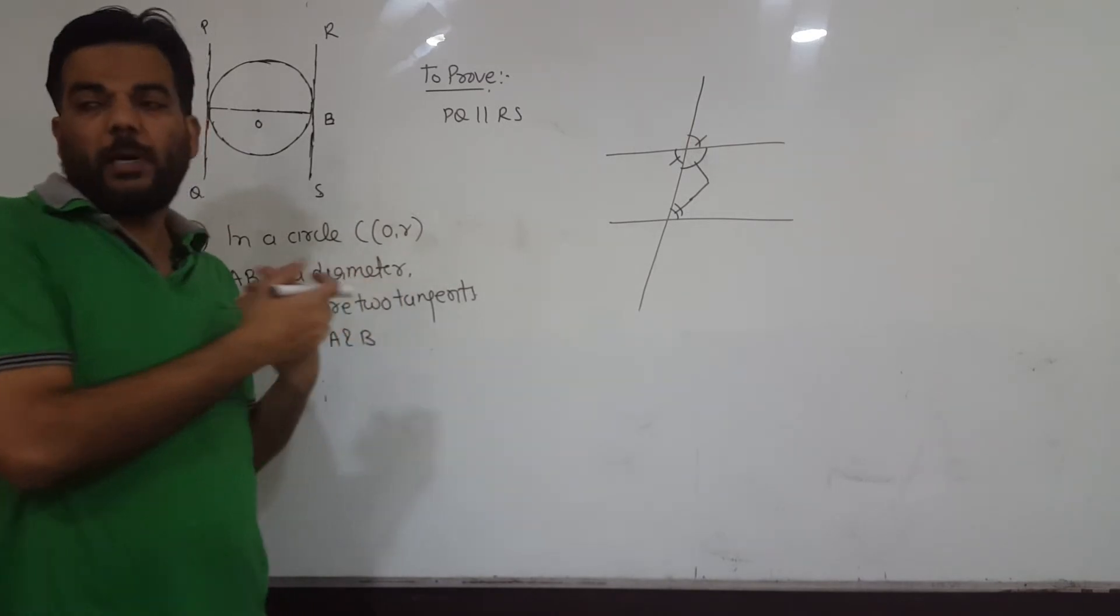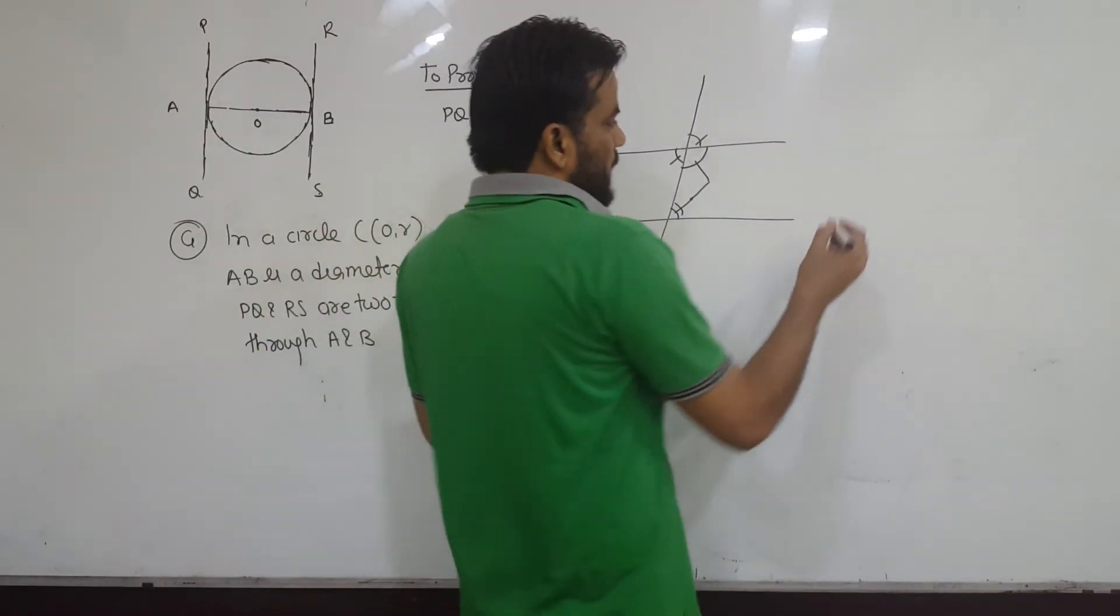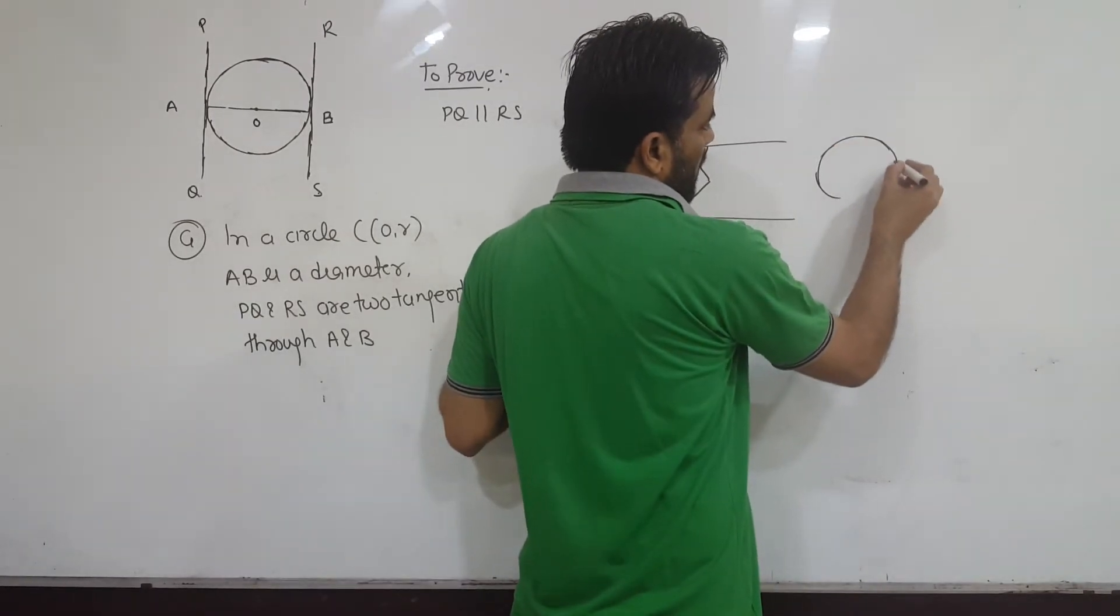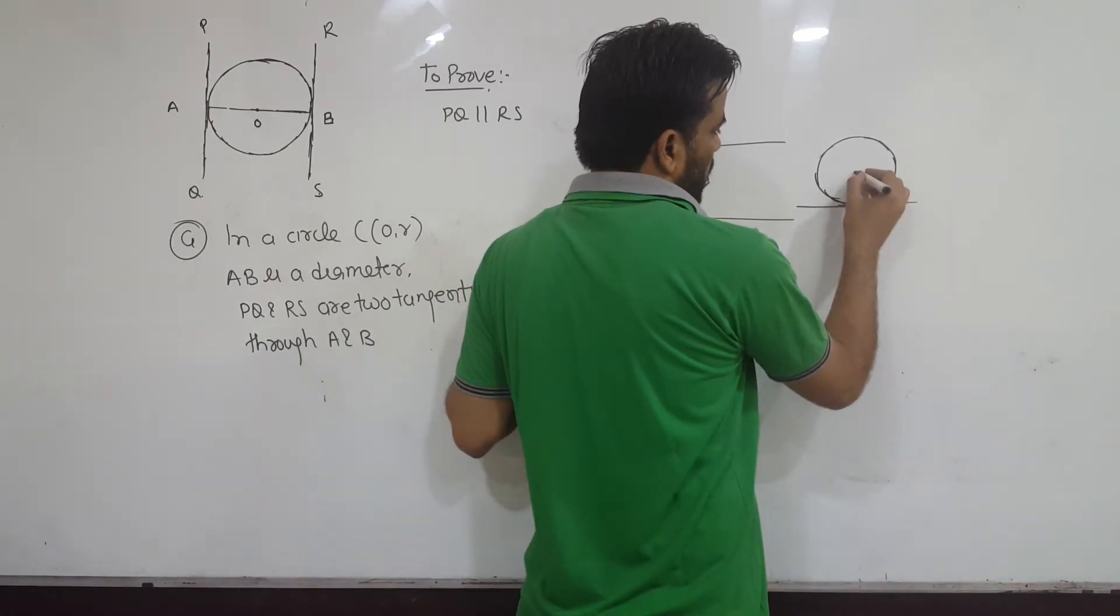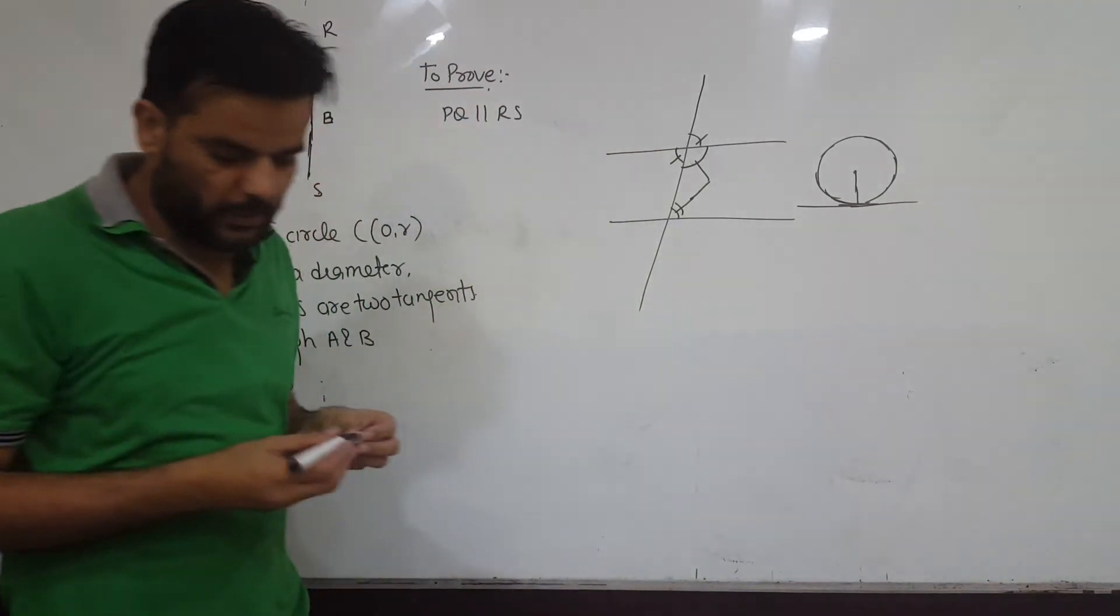Now this is what we do to prove lines parallel. But you learned yesterday about tangents - we have a theorem that states the radius is perpendicular to the tangent at the point of contact. You've learned this. Let's look at this one by one.